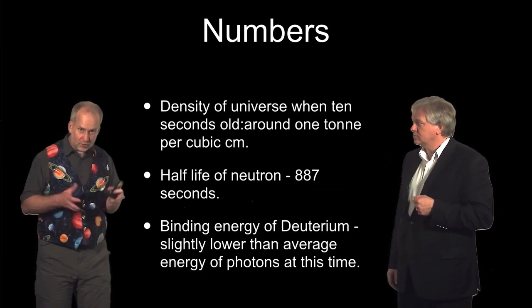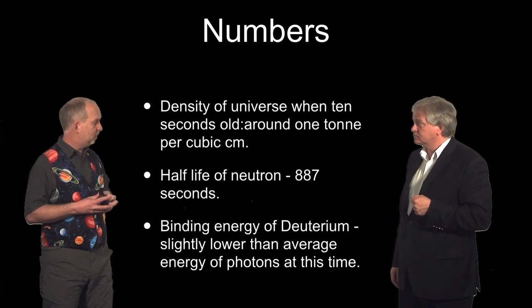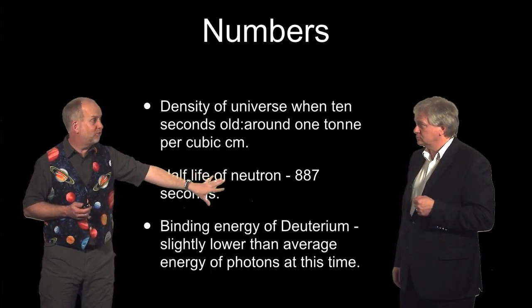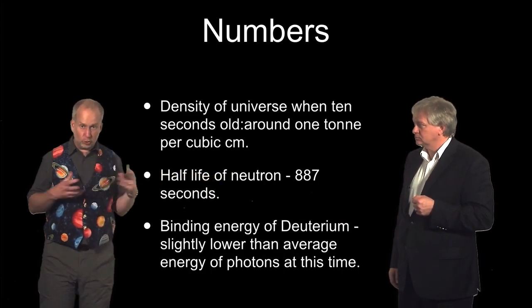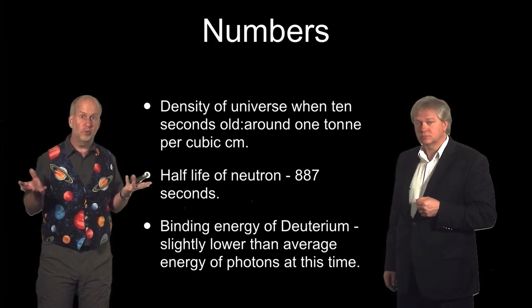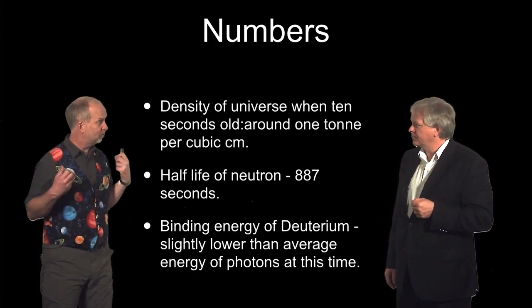Which is a problem, because it means we have to get all the neutrons bound up in something before 887 seconds, that's about 15 minutes. If they're not bound by then, the neutrons will go away, and we end up with a universe with no neutrons, which is a universe entirely of hydrogen.